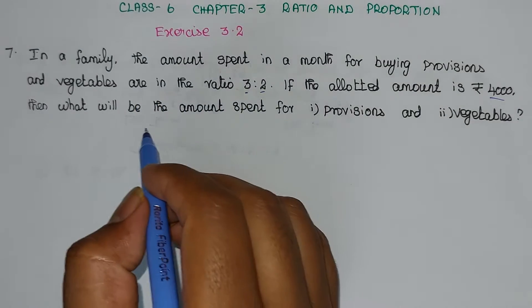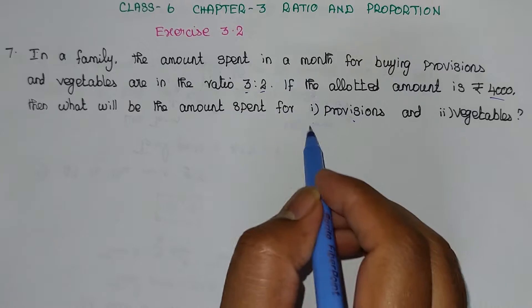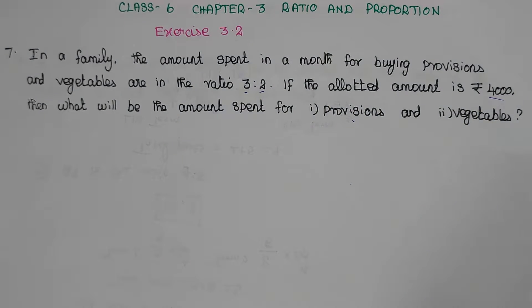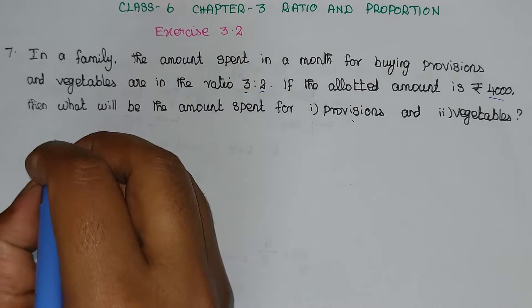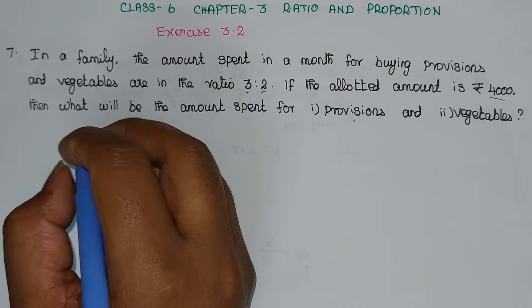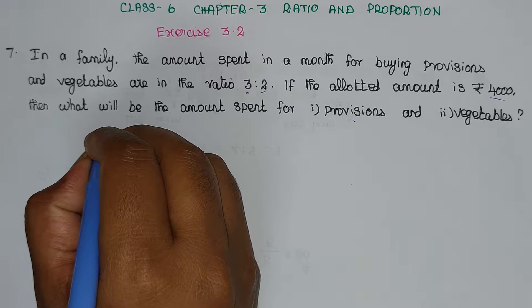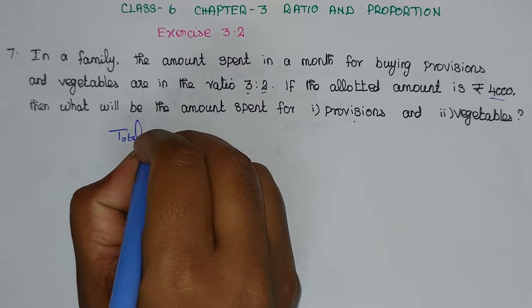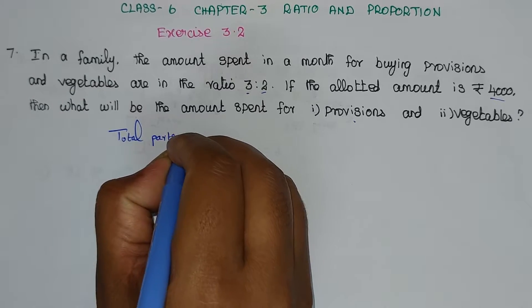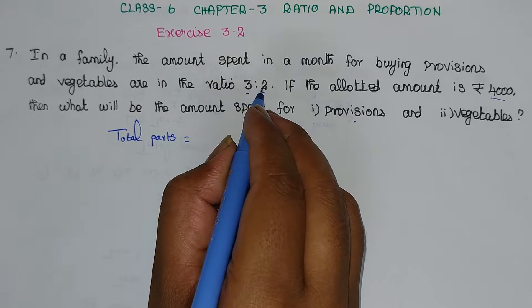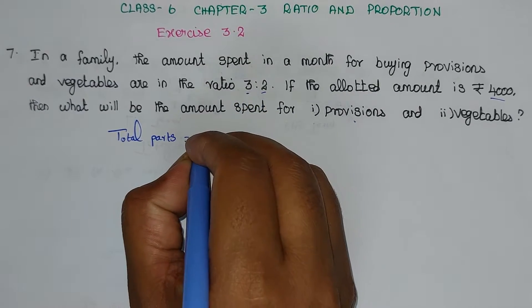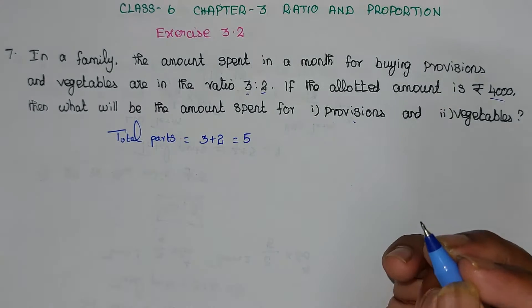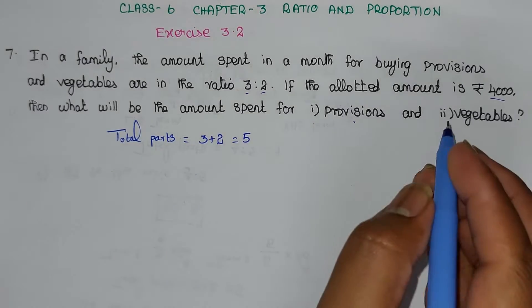How to find out? In the amount of provisions and vegetables, we need to find out. First, total parts. Total parts equal to 3 is to 2 ratio. Total parts: 3 plus 2 equals 5. Total 5 parts.